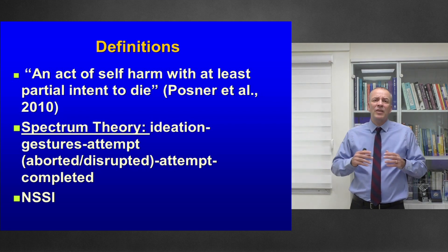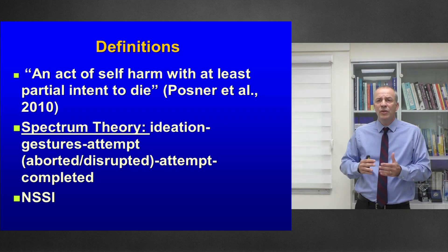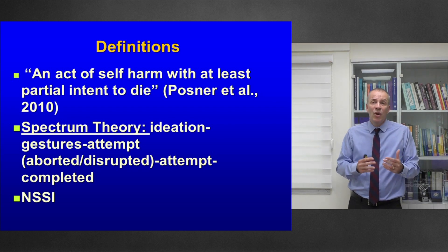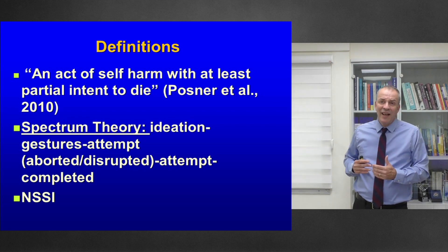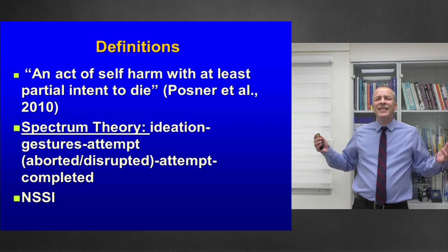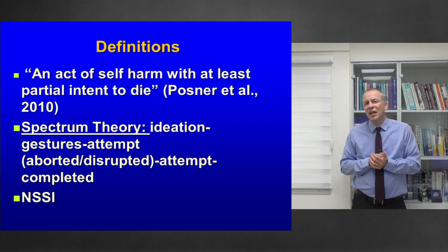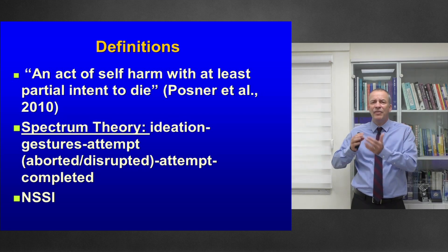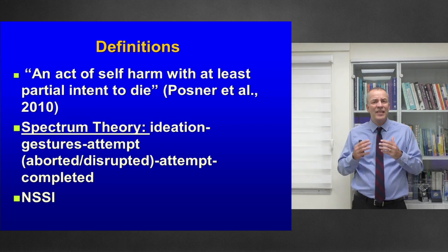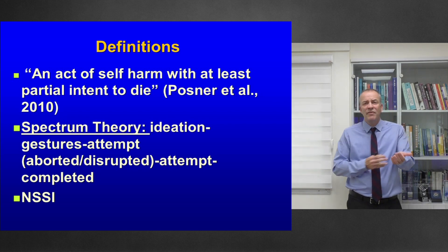We talk today about a spectrum of behaviors starting from ideation to gestures to attempts that may be either aborted — I stopped the attempt myself — or disrupted — someone stopped me — which is more dangerous. And then there are people that die by suicide. There is another behavior called NSSI in the DSM-5: non-suicidal self-injury, meaning there is no intent to die. We see this in patients with borderline personality disorder who cut themselves with no intent to die.